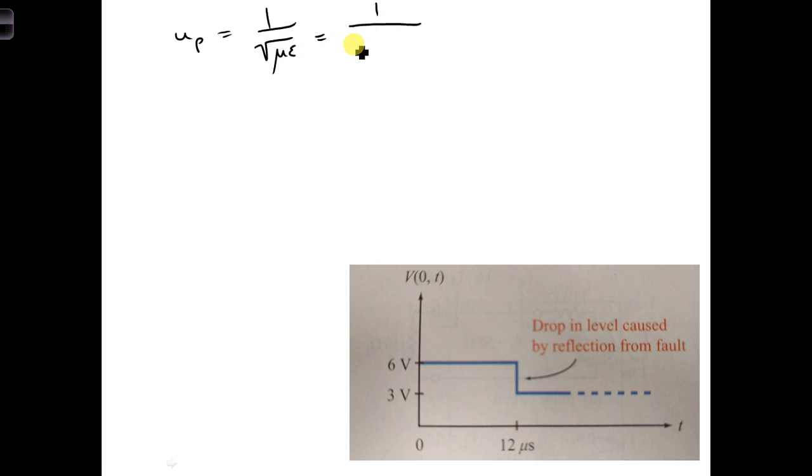Since we have Teflon between the conductors, we have mu naught, epsilon naught, epsilon r, and epsilon r was given as 2.1.